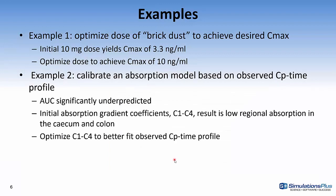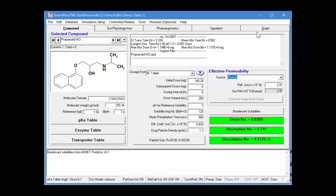This slide discusses the two examples in the tutorial. First, I'll show example one: optimizing the dose of Bricudas to achieve a desired Cmax. The initial dose of 10 milligrams yields a Cmax of 3.3 nanograms per milliliter, and we want to optimize the dose to achieve a Cmax of 10 nanograms per milliliter. In the second example, we'll calibrate an absorption model based on an observed CP time profile by optimizing the absorption scale gradient coefficients C1 through C4.